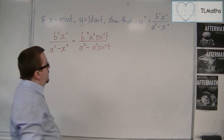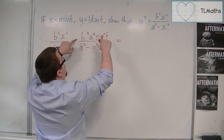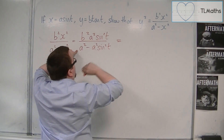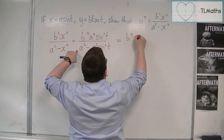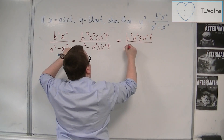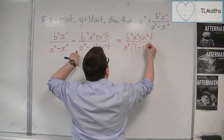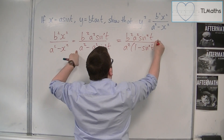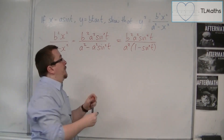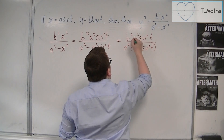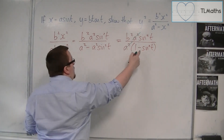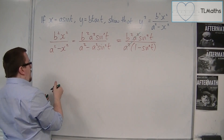We factorise the denominator, factoring out a squared to get 1 minus sine squared t. We can then cancel the a squareds — there's an a squared on the top and an a squared on the bottom, so they cancel. Then 1 minus sine squared t is replaced with cos squared t.